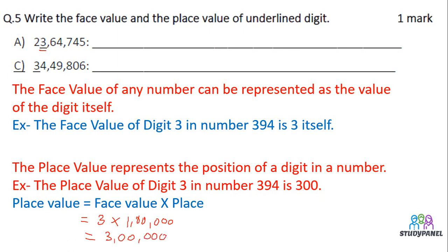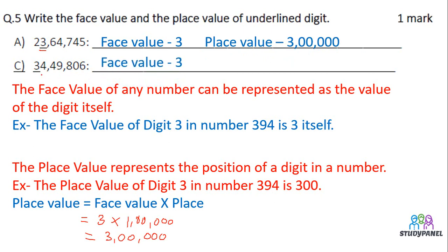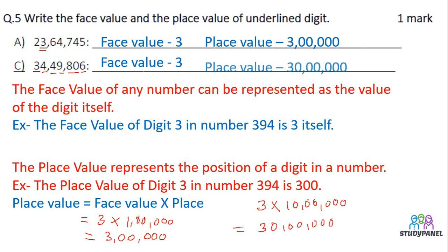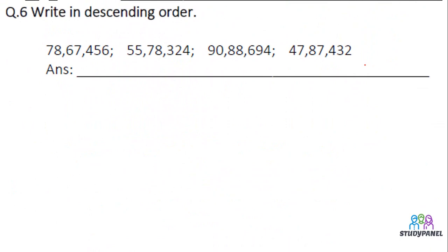The place value of 3 is 3 lakh. Once at 100, thousand, 10,000, lakh, 10 lakh — that is 1, 2, 3, 4, 5, 6 zeros. We multiply 3 by 1, keeping the rest of the zeros. So our answer will be 30 lakhs. This is how we find out the answers.